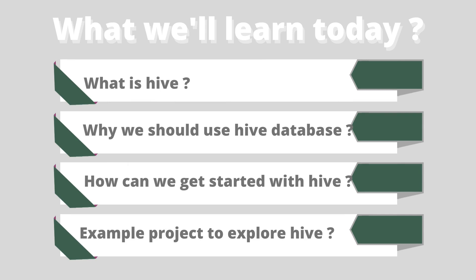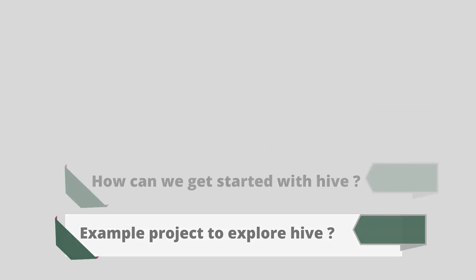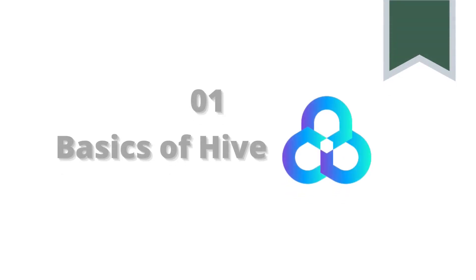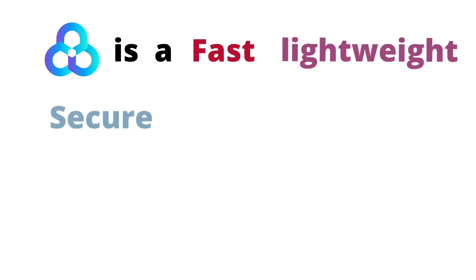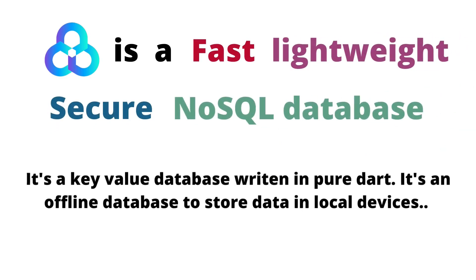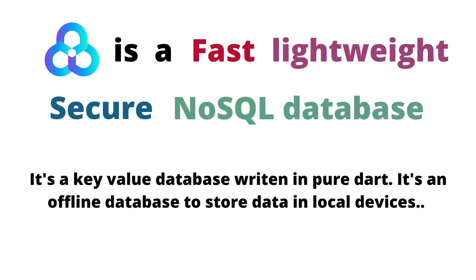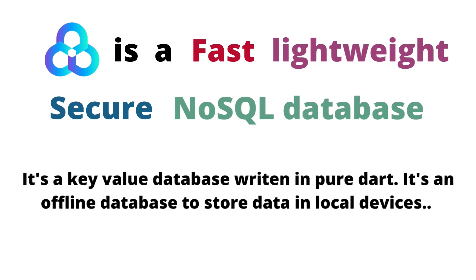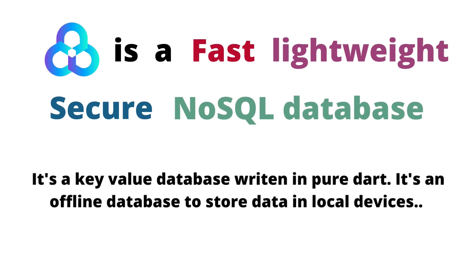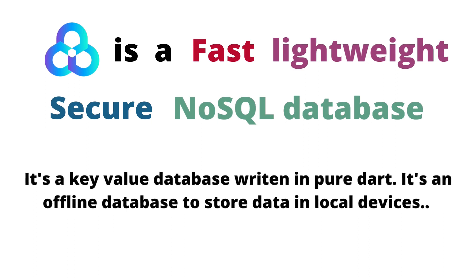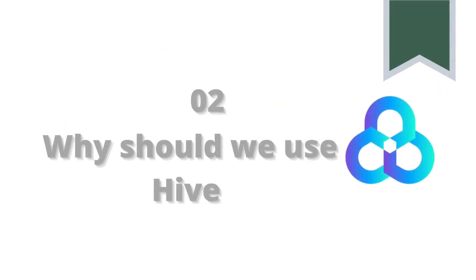How can we get started with Hive, and an example project to explore Hive. Number one: basics of Hive. Hive is a fast, lightweight, secure, and NoSQL database. It's a key-value database written in pure Dart. It's an offline database to store data in local devices.